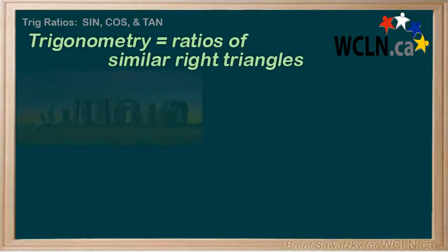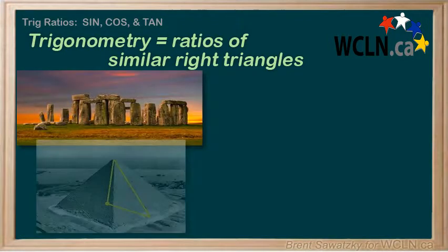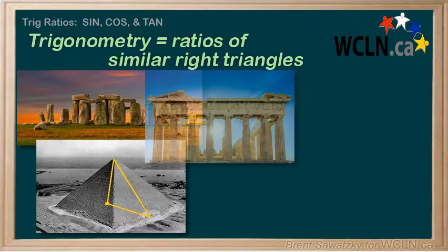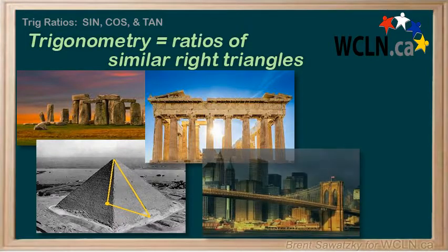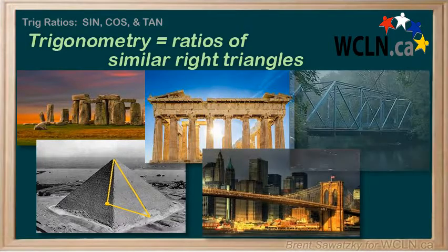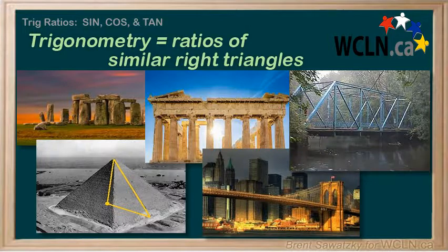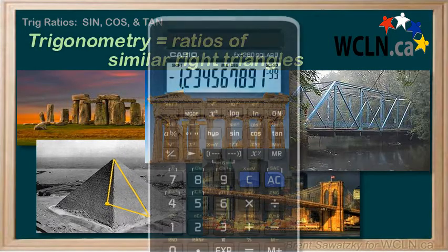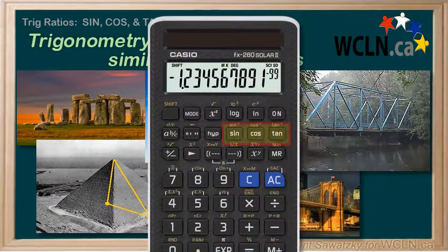Because right triangles are so common in the world of engineering and construction, designers were always finding that they were using similar right triangles and the ratios to figure things out. Coming up with solutions like this became so common with smart designers that they gave the right angle ratios names.